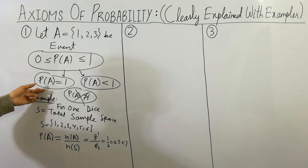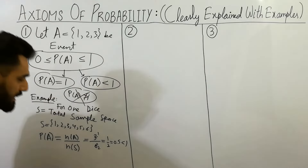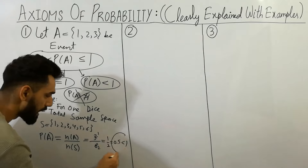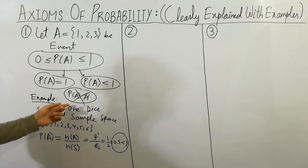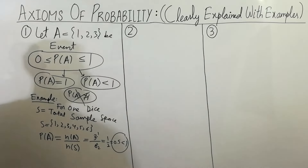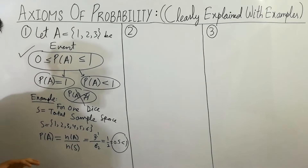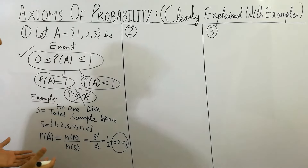So I have proved that probability of A equals 0.5, which is less than 1 but can never be greater than 1. I hope that you have understood the first axiom of probability. This is very, very easy.